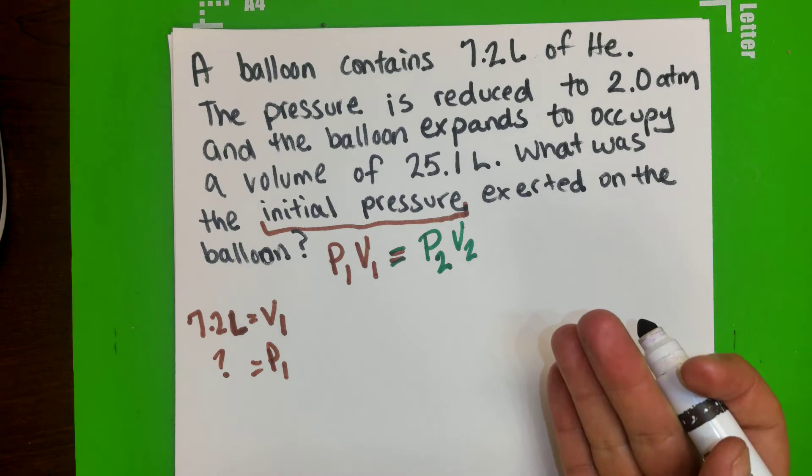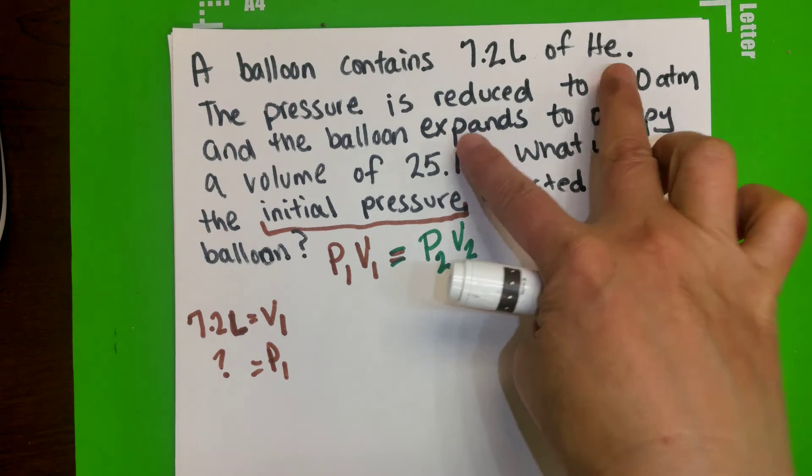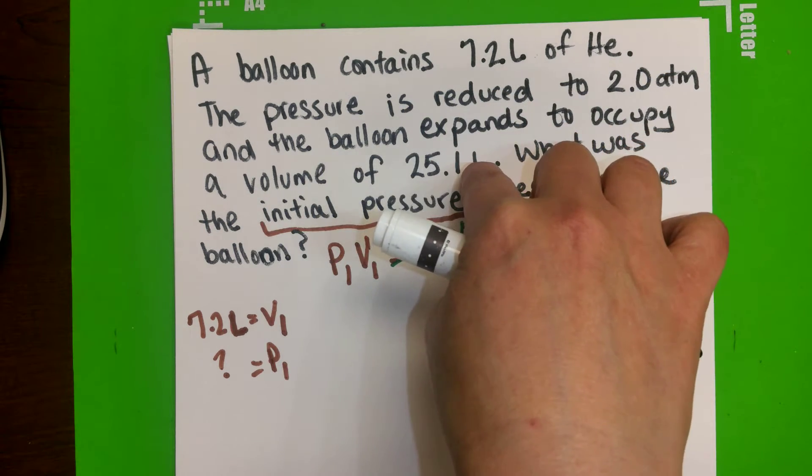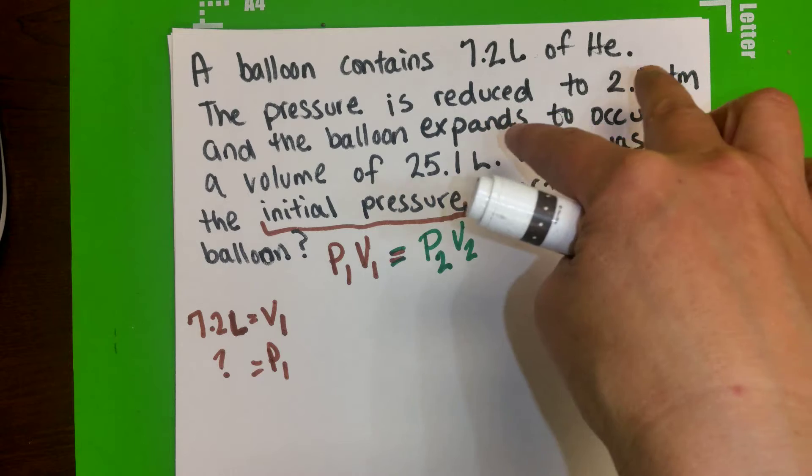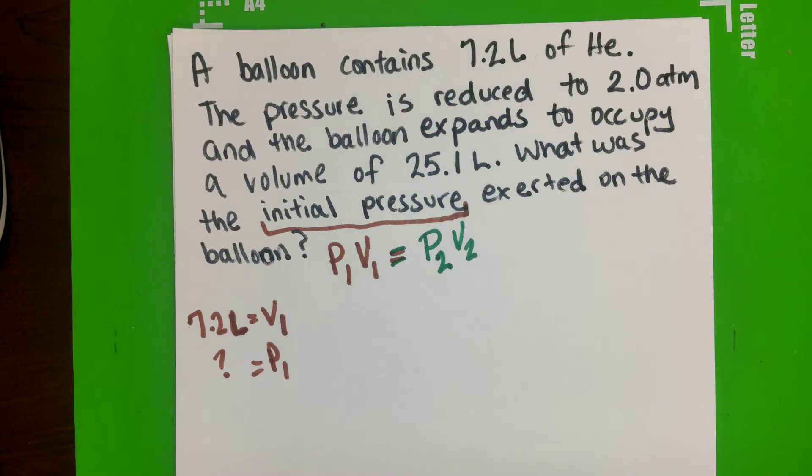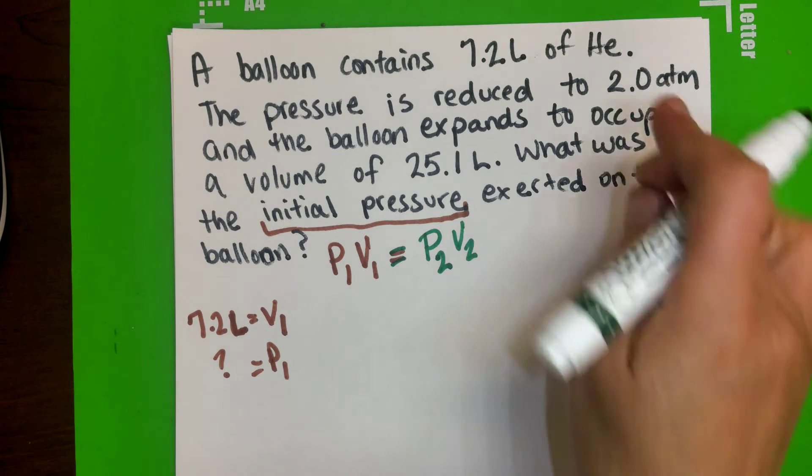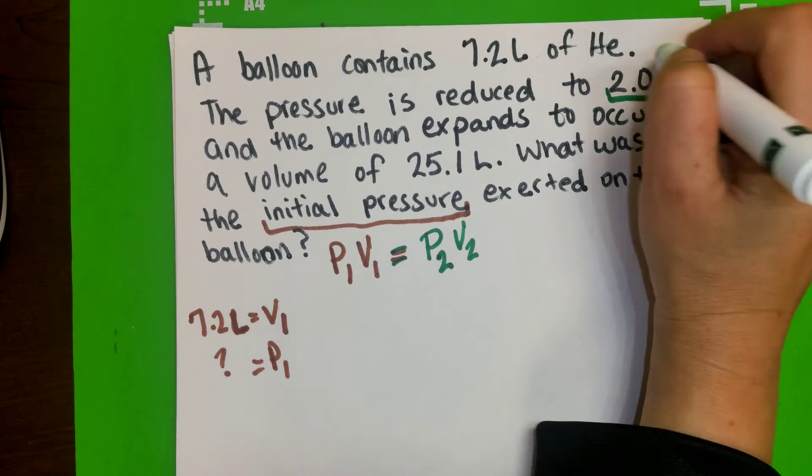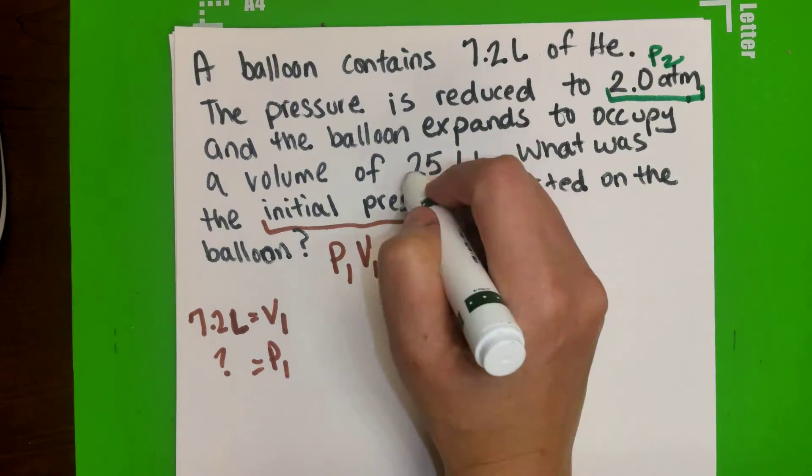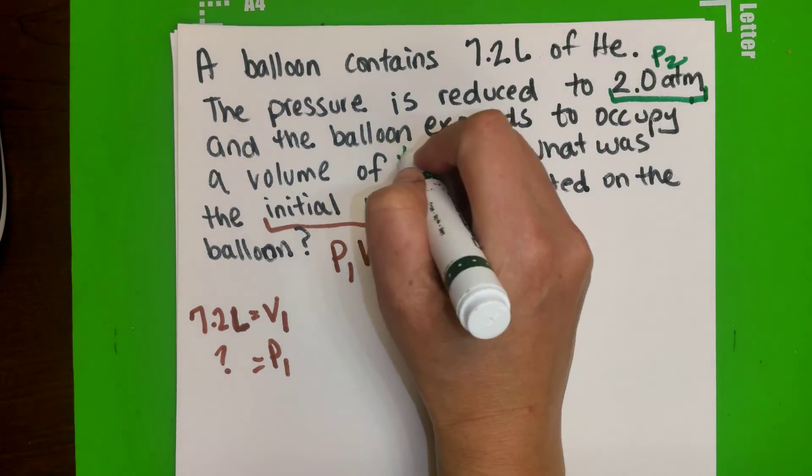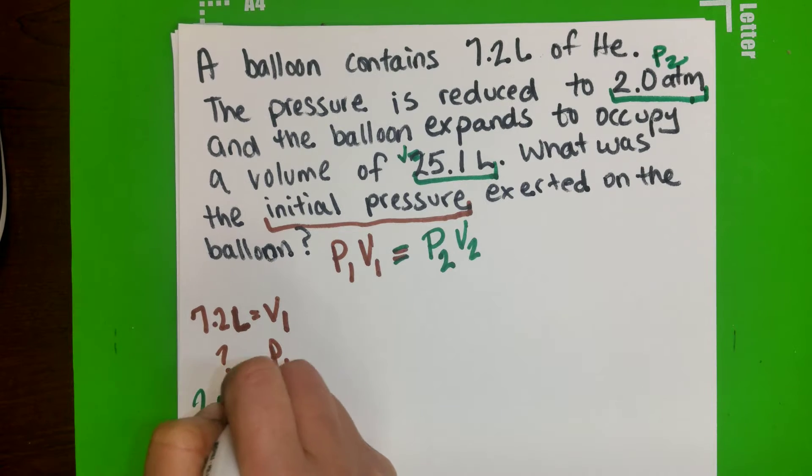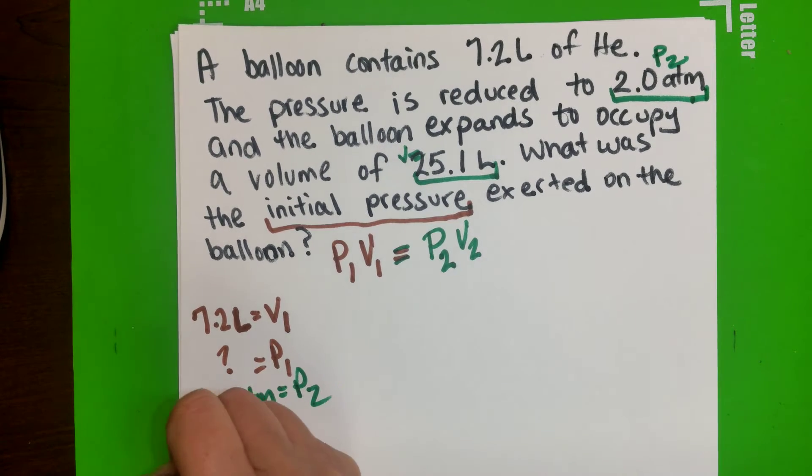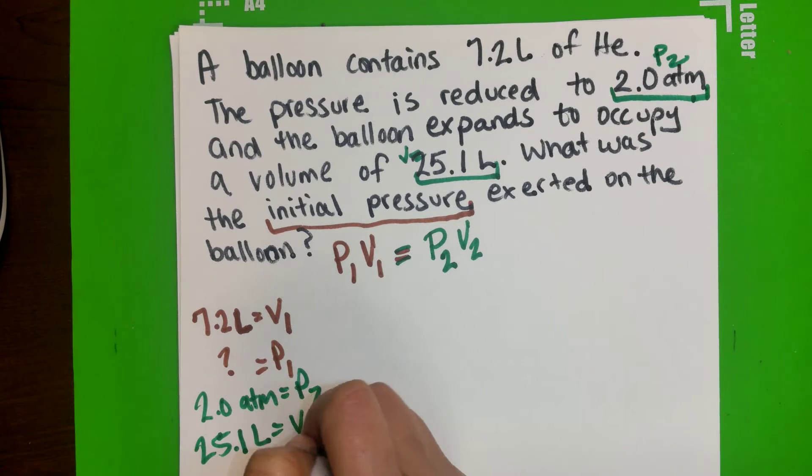And even if you get confused, think about it. These two are together. It's reduced and it's expanded to a volume of this much. So that has to be your P2, V2. So your 2.0 ATM will be your P2, and the 25.1 liter will be your V2. So 2.0 ATM equals P2, and 25.1 liters equals your V2.